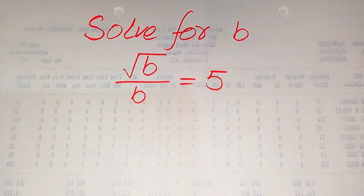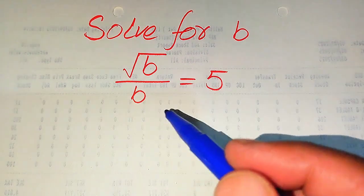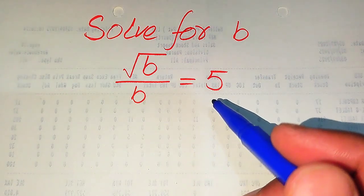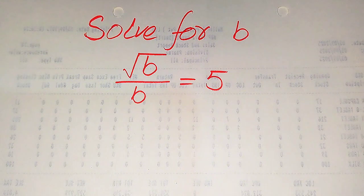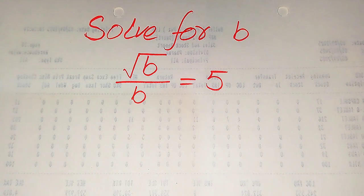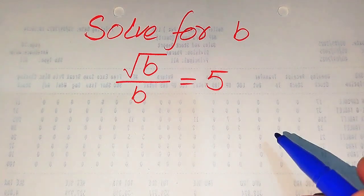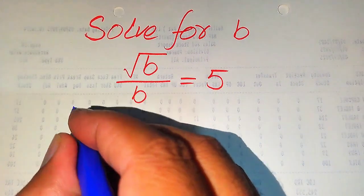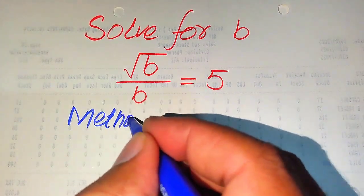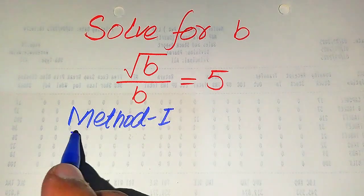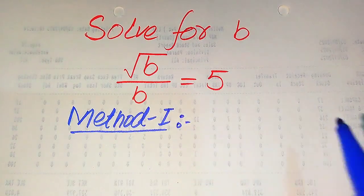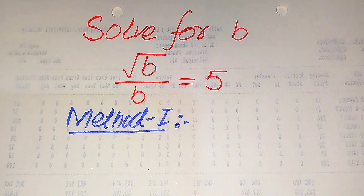Hello everyone. How to solve this problem: for the values of B, if we have square root of B divided by B equals 5, we solve for all values of B. First we find all the roots of this equation, and at the last we verify which of the roots are solutions and which are extraneous roots. We solve this problem using two methods.